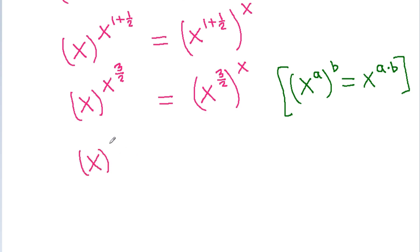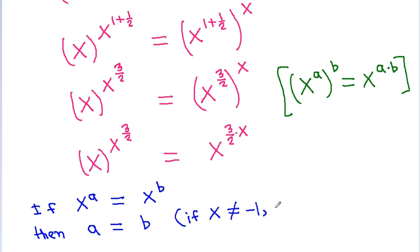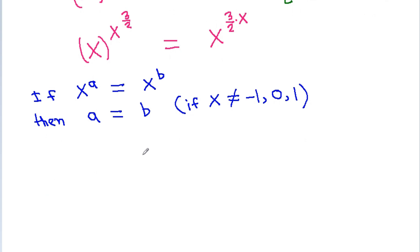So we have x^(x^(3/2)) = x^(3x/2). If x^a = x^b, then a = b, provided x is not equal to -1, 0, or 1. We know x is greater than 0, so x cannot be -1 or 0, but x can equal 1.